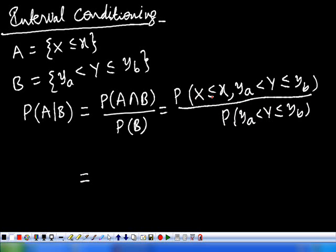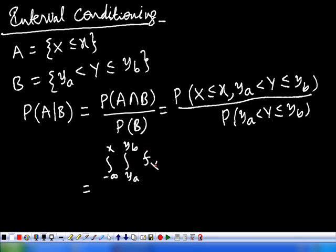So this is the joint probability — the joint probability of this region. We can write this as the integral from minus infinity to x, and the integral from y_a to y_b, of the joint density f(x, y).